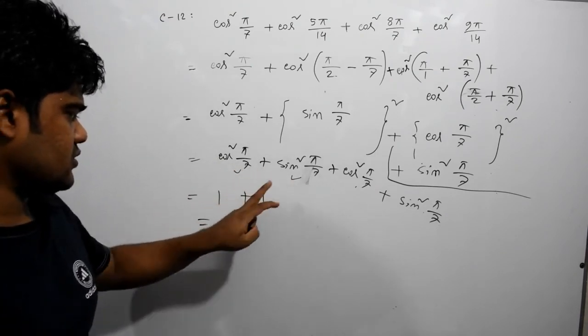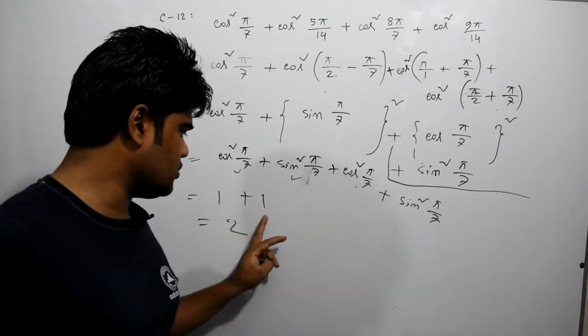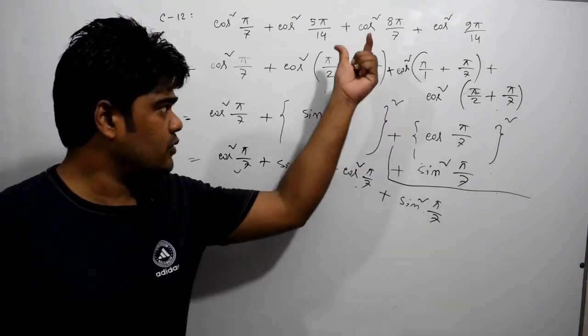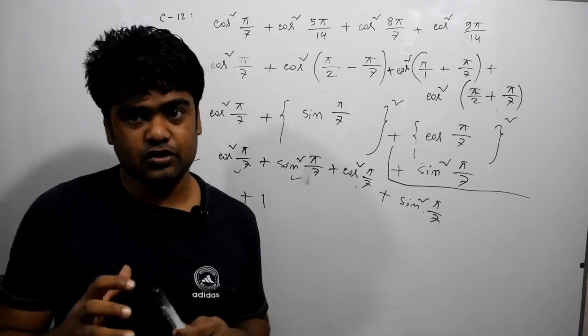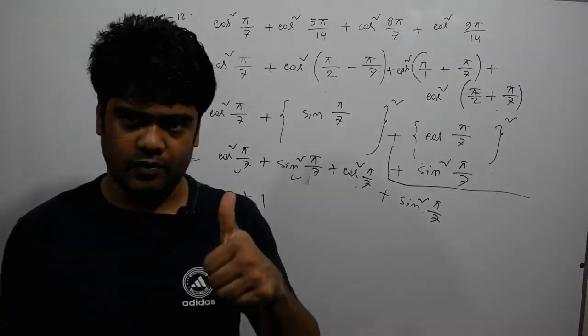It's not a problem. Cos squared theta plus sin squared equals 1. Equal to 2. First we will have to do it. So I will understand the details. I will not do it. Okay.